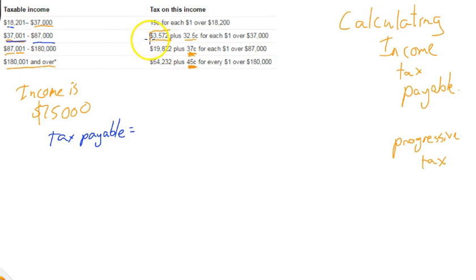So the tax payable is equal to this, $3,572, plus, instead of doing 32.5 cents,